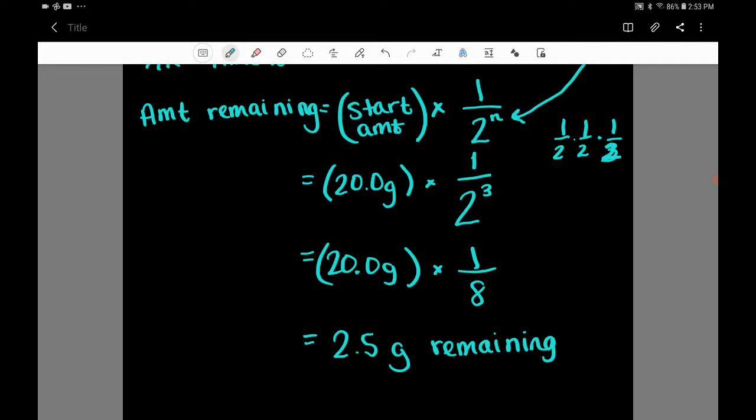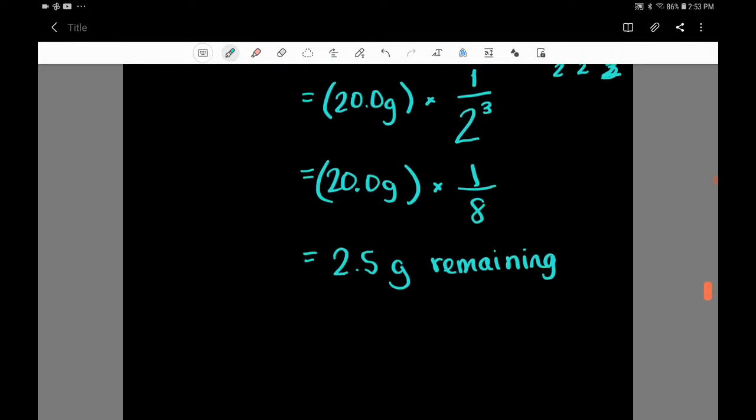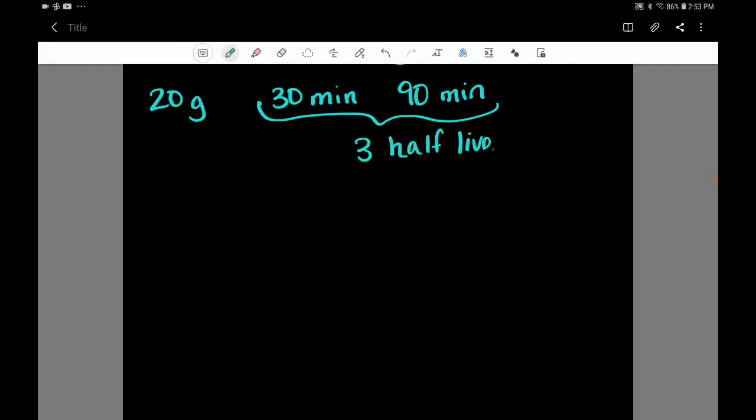So that's kind of the formula way to do it. There's another way to do it because we know that we have 20 grams and we know the time of one half-life is 30 minutes and we know it's 90 minutes total. So the other thing that you can do, combining these two with our N formula, that's how we got three half-lives. Just as a summary of where we're at.